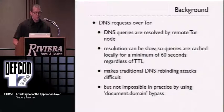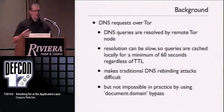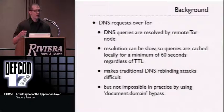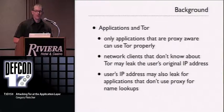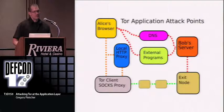DNS queries are resolved by your remote Tor node, not locally. If somebody can cause you to make a DNS request, you will be leaking information about where you're located — perhaps your local ISP or your own local network. This makes traditional DNS rebinding attacks difficult because Tor is slow in resolving DNS requests and they're cached for a minimum of 60 seconds, regardless of the remote server's TTL. Only specific applications aware of Tor are going to be able to use it without leaking your IP address or DNS requests.